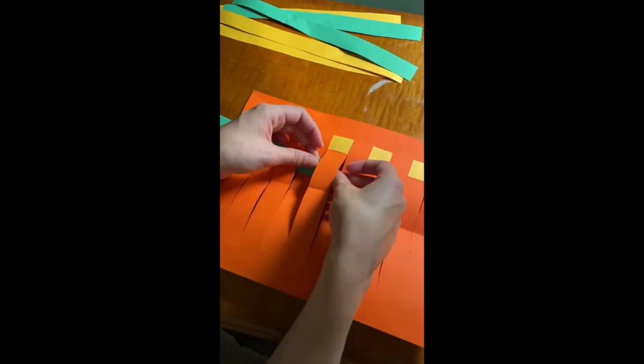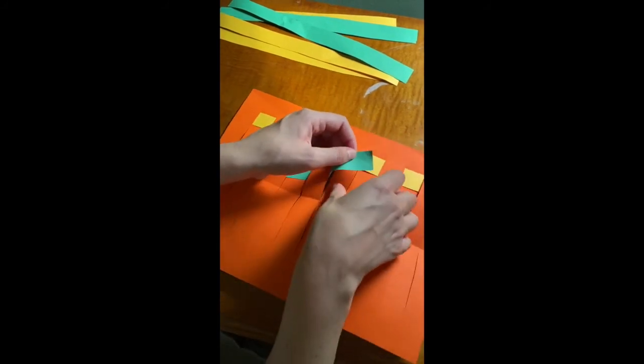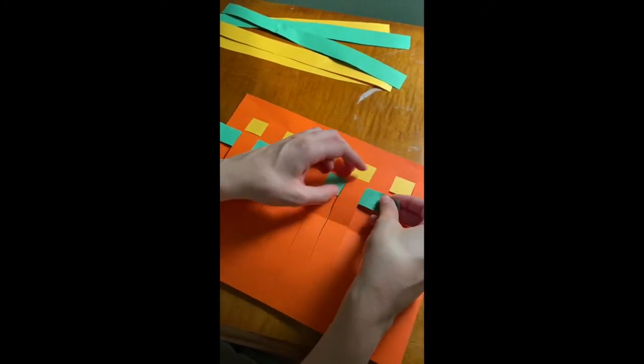Weave the rest of the strips in an alternating pattern until you get to the bottom of the slits and your loom is full.